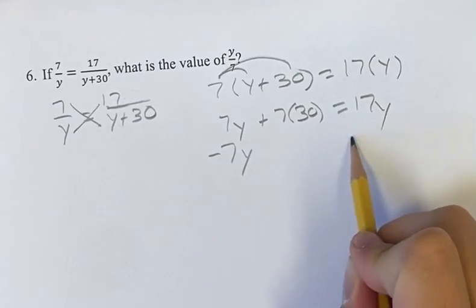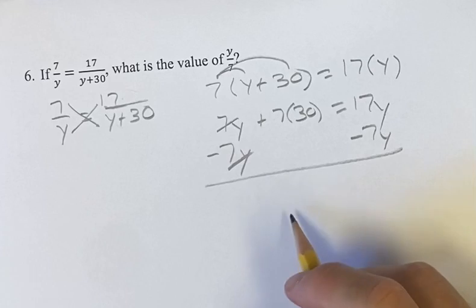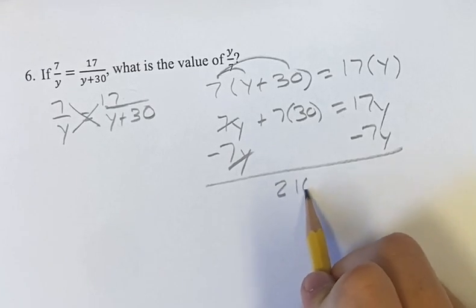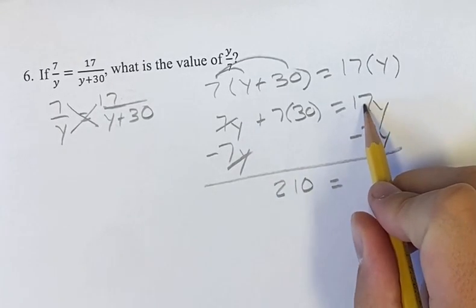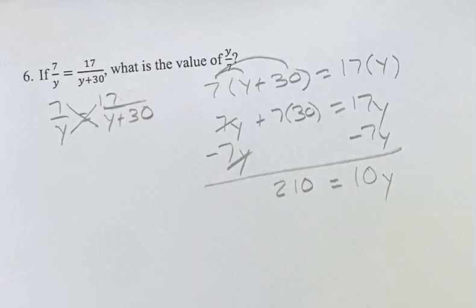If we subtract 7y from both sides, these cancel. We're left with 7 times 30 on this side is 210. And that's going to be equal to 17y minus 7y is 10y.